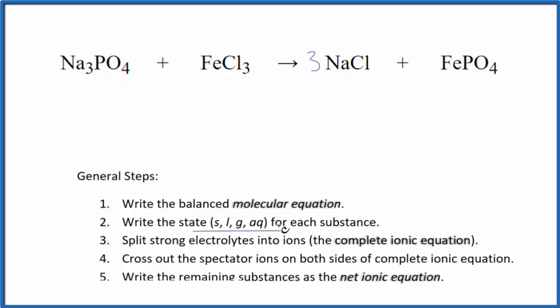Next, we need to write the state for each substance. So if you know your solubility rules, sodium compounds are very soluble, aqueous, that's going to dissolve. Chlorides are going to be soluble as well. Sodium chloride will be soluble, but this iron phosphate, iron(III) phosphate, phosphates often are not soluble.